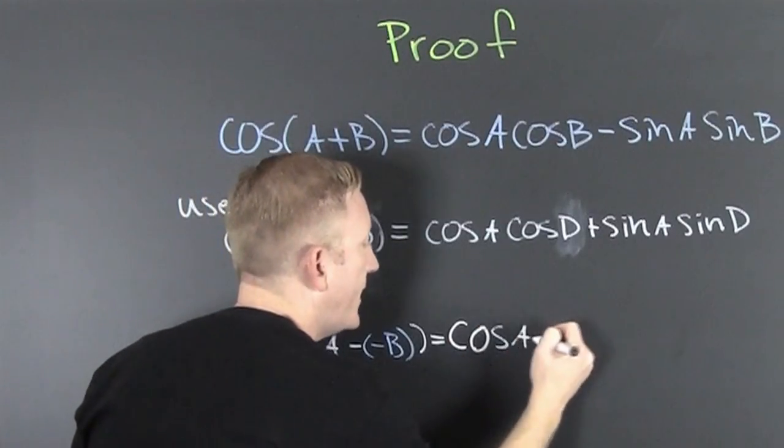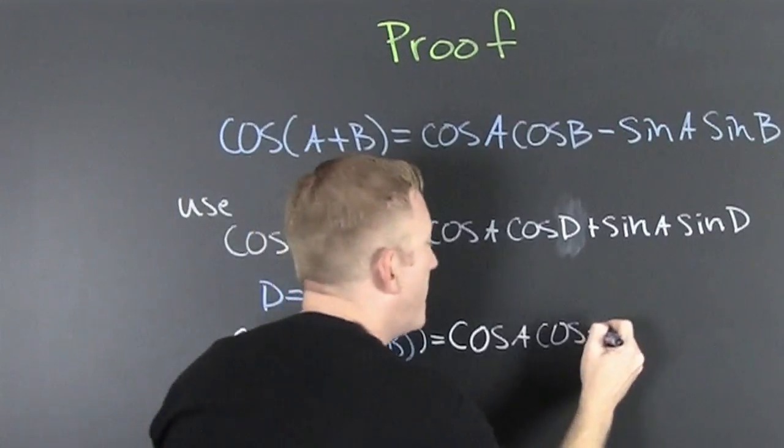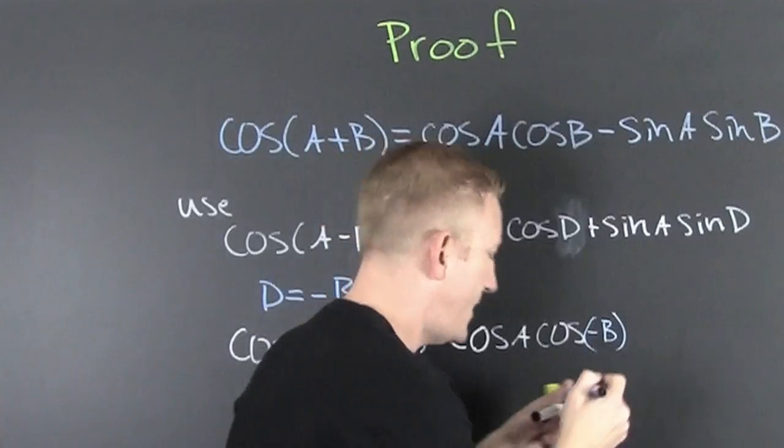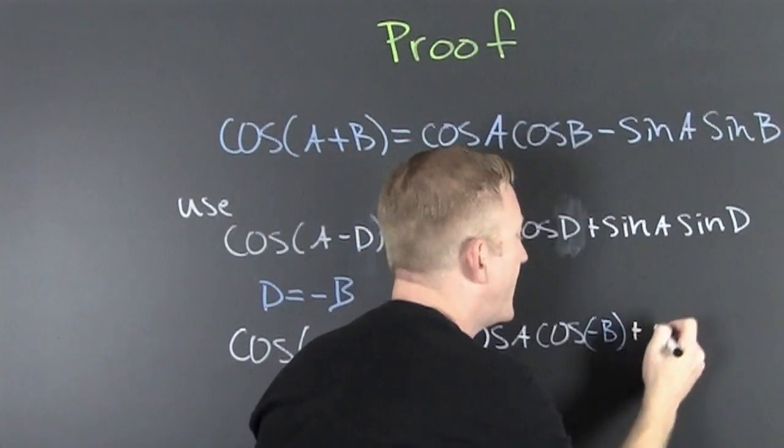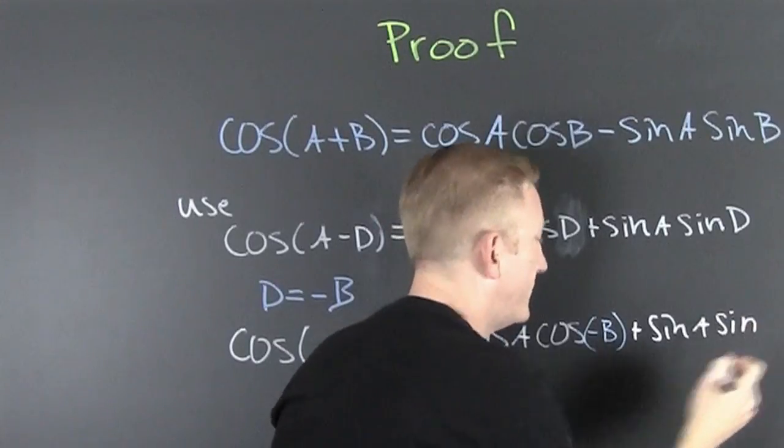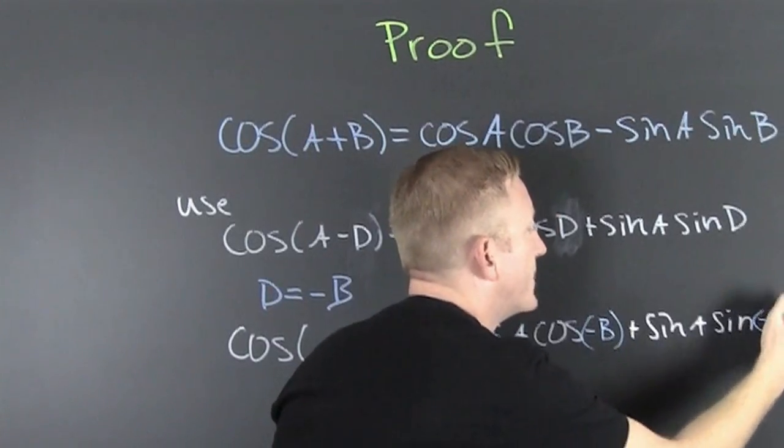This is the cosine of A, the cosine of A minus B. And then, this is going to be plus the sine of A, the sine of minus B.